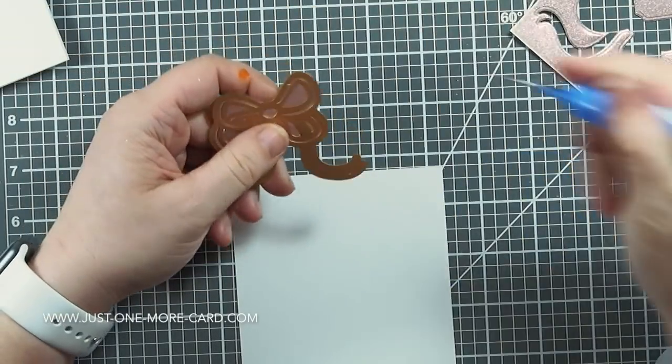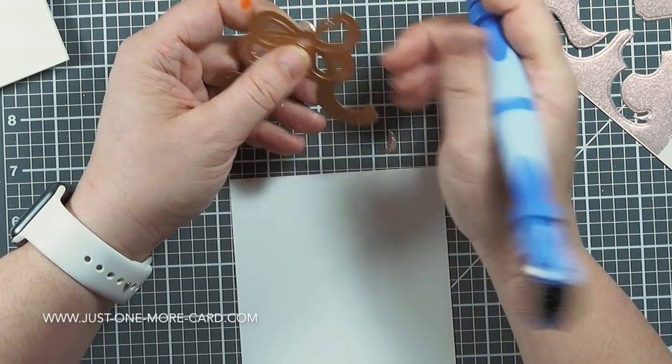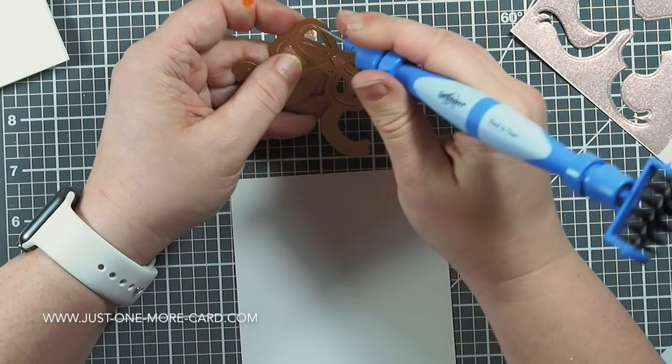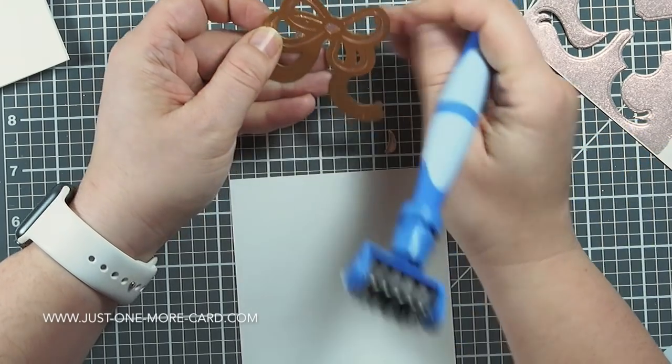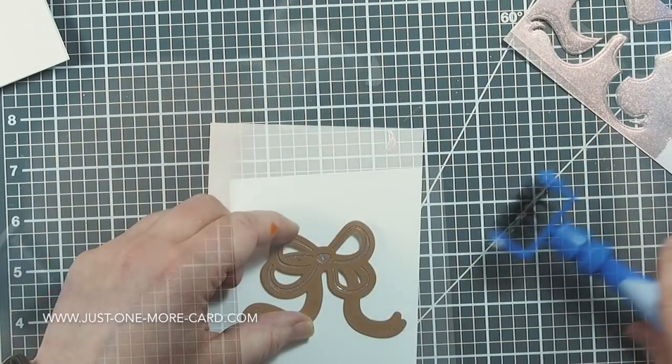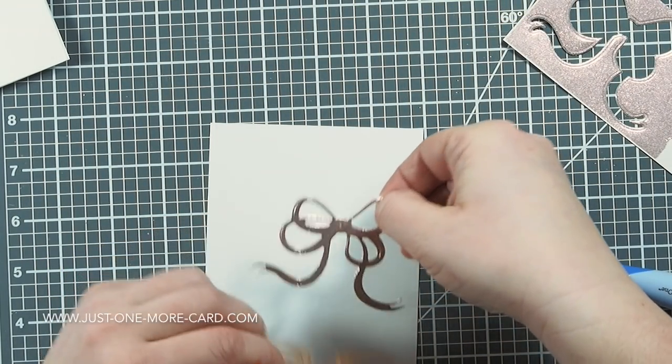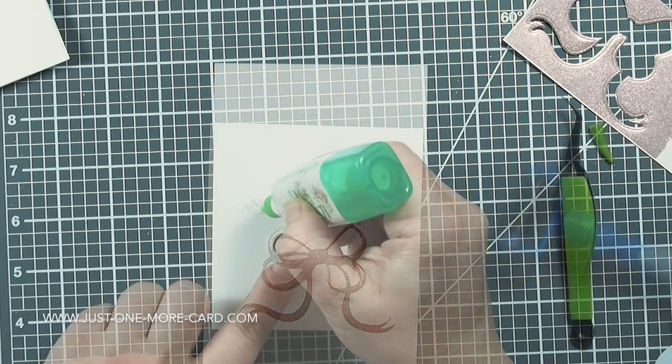And then I'm using the tool in one, which is like this pokey tool, also from Spellbinders, to easily remove all the parts of the die cut that I do not need. And you can see it's quite easy to get everything out, and I'm just using the brush end here to carefully get the actual die cut out that I want to use.